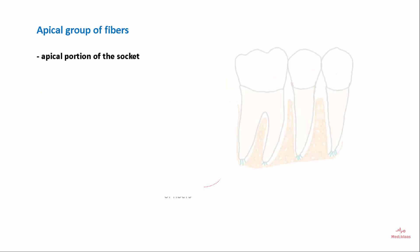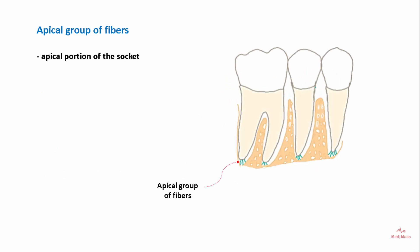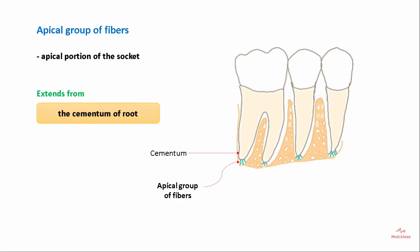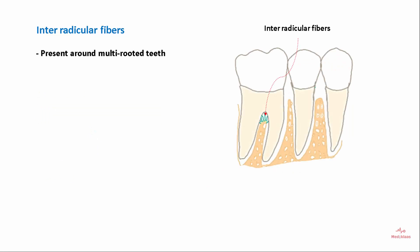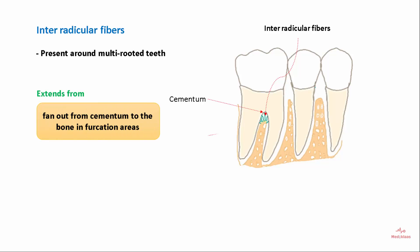The apical group of fibers is present in the apical portion of the socket, extending from the cementum of the root to the alveolar bone. The interradicular group of fibers is present around multi-rooted teeth and fans out from the cementum to the bone in the furcation areas.